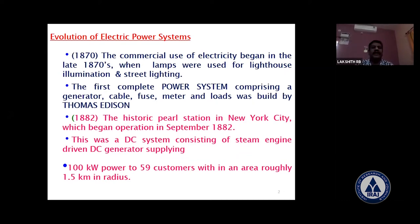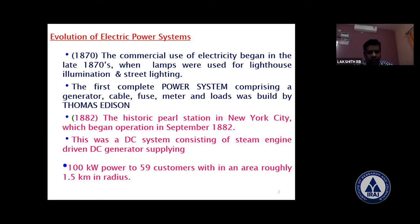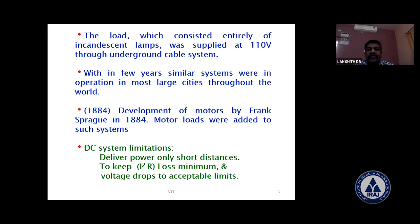The evolution of electric power system: in 1870, the commercial use of electricity began in the late 1870s, when lamps were used for lighthouse illumination and street lighting. The first complete power system — comprising a generator, cable, fuse, meter, and load — was built by Thomas Alva Edison in 1882, at the historic fuel station in New York City, which began operation in September 1882.